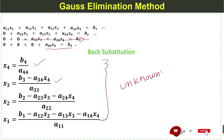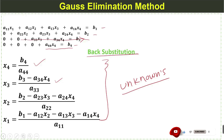We get all the values of the unknowns from back substitution. In the next lecture we will discuss an example related to the Gauss elimination method.